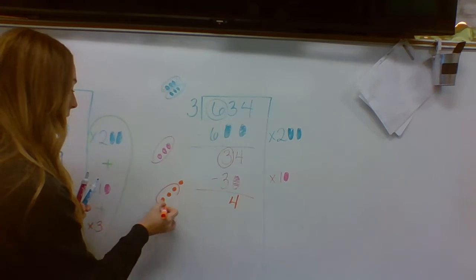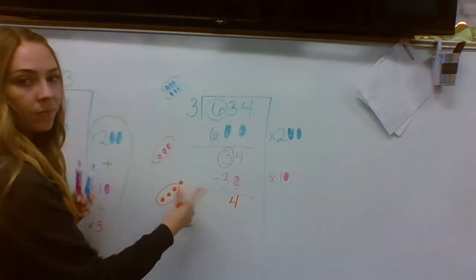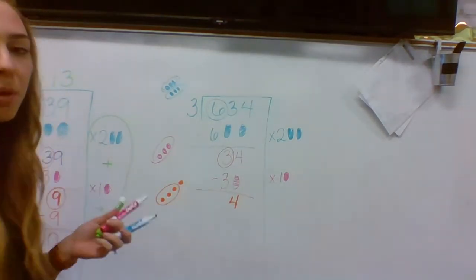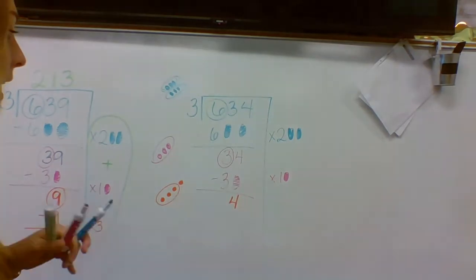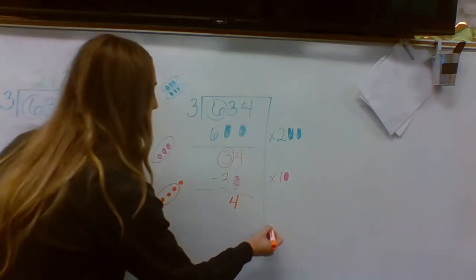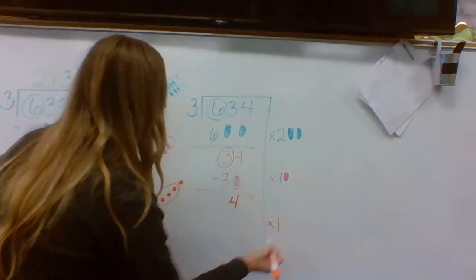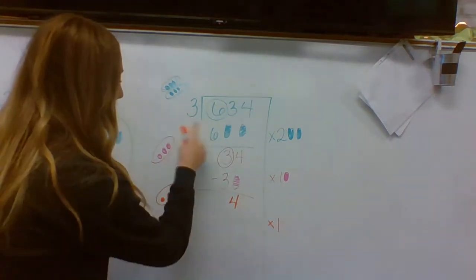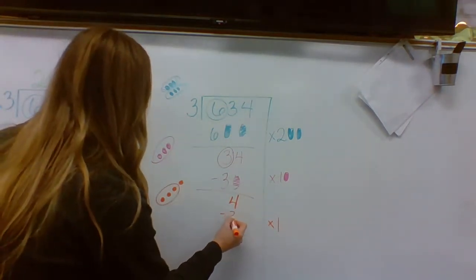One, two, three. Uh-oh. I can't make another group of three. So here's what happens. I can make one group of three. So I'm going to take that out. Three times one is three. So I'm only taking away three.